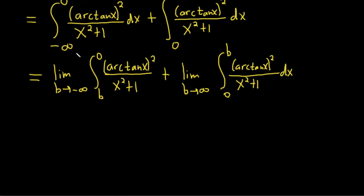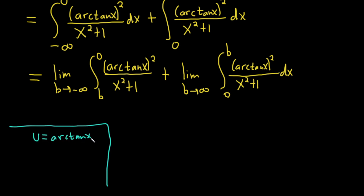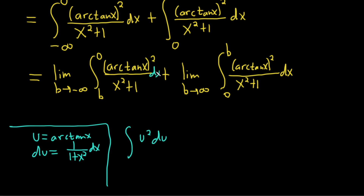Now we have to integrate. This should be a pretty easy integration — I'll do it on the side so I don't have to make two u-substitutions. We let u equal the arctangent of x, so du equals one over one plus x squared dx, which is remarkably convenient because that's exactly what's in the integral. We end up with the integral of u squared du, which gives u cubed over three, so the antiderivative is arctan(x) cubed over three.